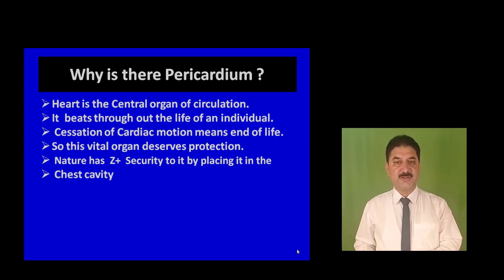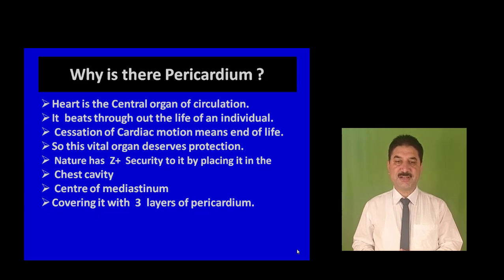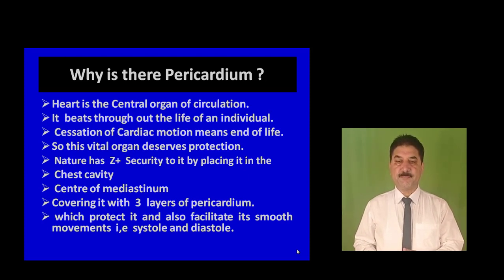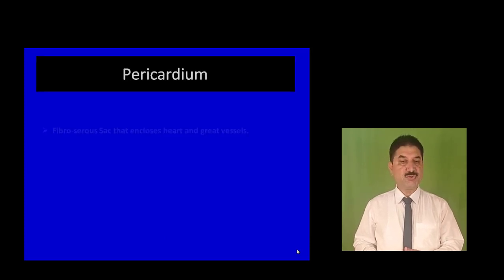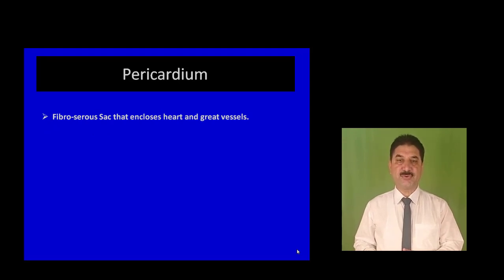Nature has given Z-plus security to it by placing it in the chest cavity, in the central area — what we call the middle mediastinum — and then protecting it within three coverings of the pericardium, which protect it and also facilitate its smooth movements during cardiac motion, that is systole and diastole.